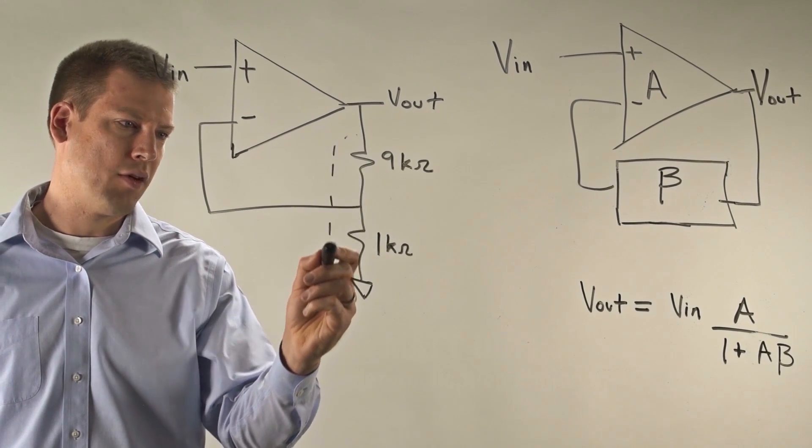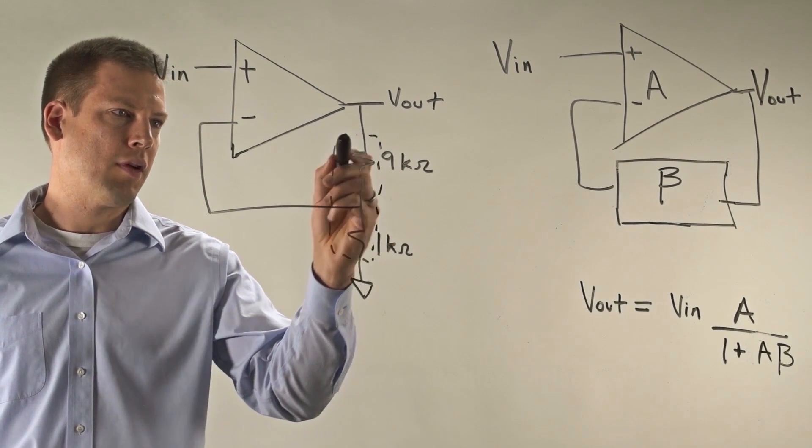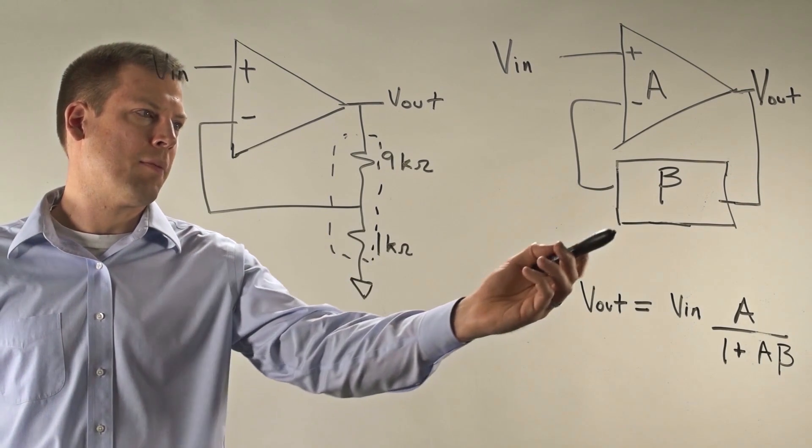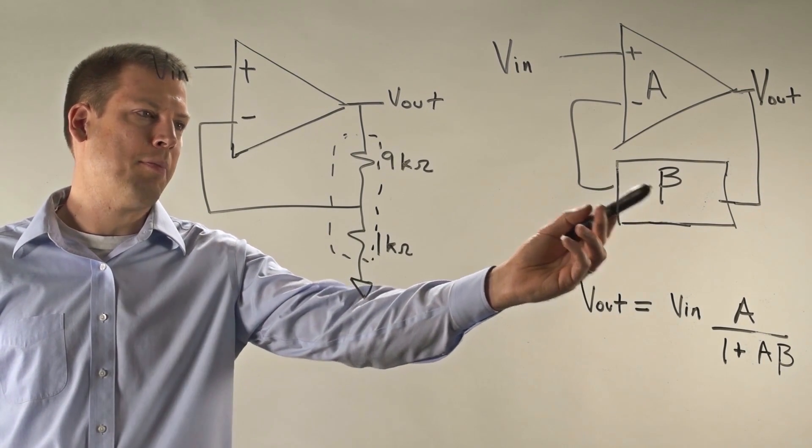Then I can take the feedback network that we have with these resistors here, and the typical way to represent that is a block with gain of beta.